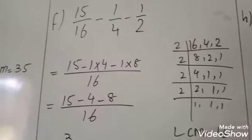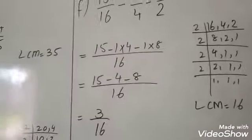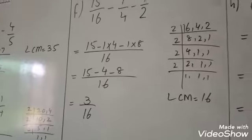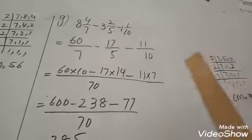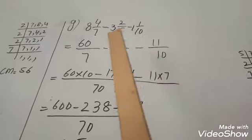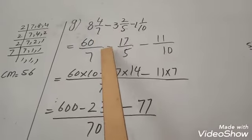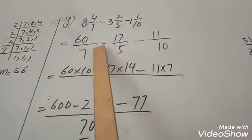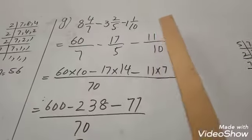F part is also the same — here are mixed forms, so we change them into improper fractions, and the remaining method is the same.